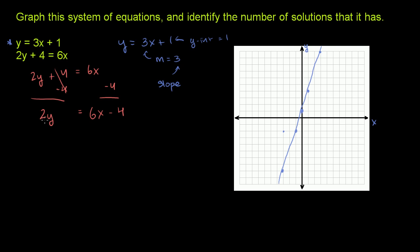And then to get everything in terms, to solve for y, we just have to divide everything by 2. So let's divide everything by 2. And we get y is equal to 3x minus 2. So that's the second equation in slope-intercept form.